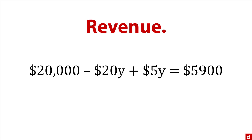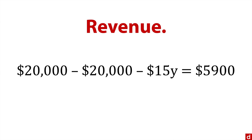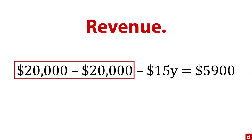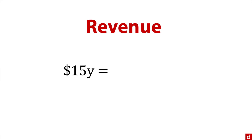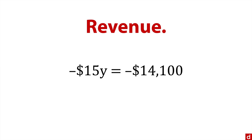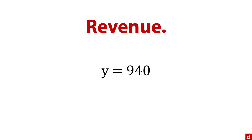We can combine those terms because they're on the same variable — 20y minus 5y gives us 15y. Then we subtract 20,000 from both sides, and that disappears on the left. On the right side I do the math and get negative $14,100. Then I divide both sides by negative 15, and we get y equals 940.